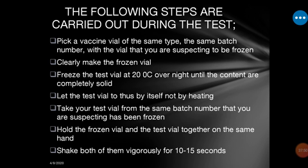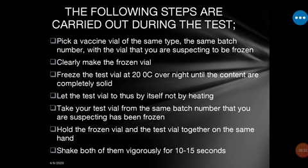The steps of the shake test are as follows. Step one: pick a vaccine vial of the same type and the same batch number as the vial you suspect to be frozen. You then collect a vaccine from another clinic that has the same batch number, same expiry date, same manufacturing date, and is from the same manufacturer.